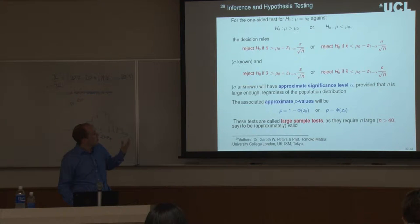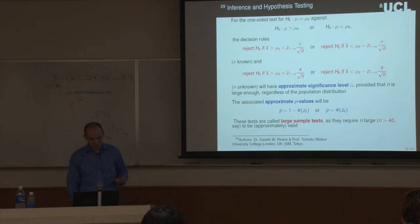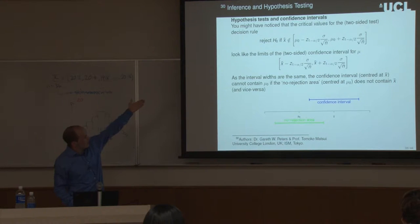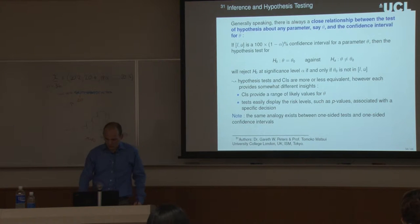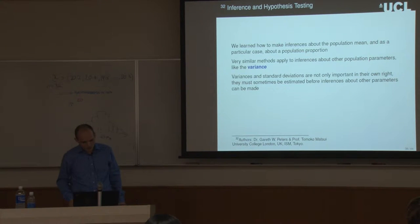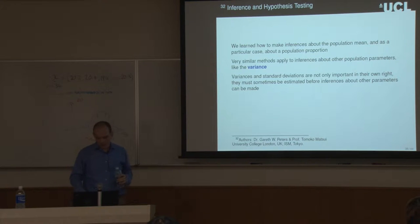We come to one-sided and two-sided tests with approximate significance levels and approximate p-values, since we don't have exact normal distributions and we're inputting an approximation of the standard deviation through the sample variance. We reject the null if the statistic falls outside the confidence interval. That was for the sample mean. We can now extend this technique to other population parameters, such as the variance, and use the variance to make inferences about other parameters in distributions.